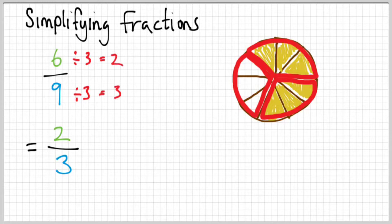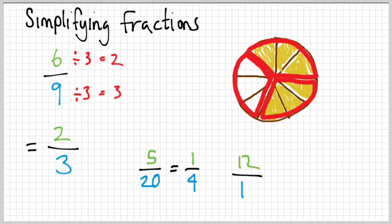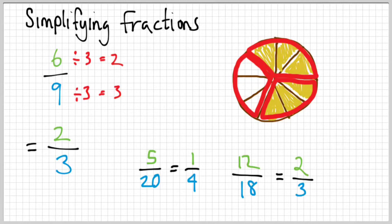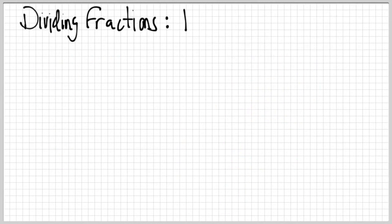Let's reduce more fractions. Five-twentieths: five goes into both five and twenty, so five divided by five is one and twenty divided by five is four — five-twentieths equals one-fourth. Twelve-eighteenths: six is the greatest common factor, so twelve divided by six is two and eighteen divided by six is three — twelve-eighteenths equals two-thirds. Always make sure to reduce answers that are in fraction form. That's all for fractions — good luck, see you next time!